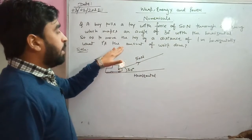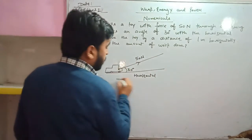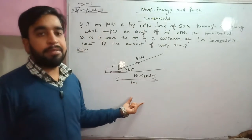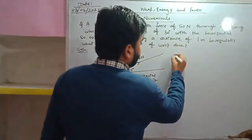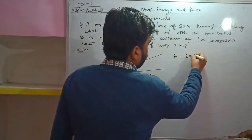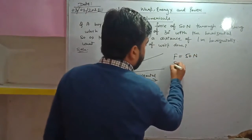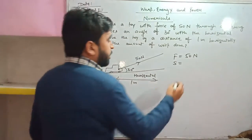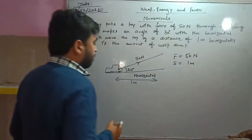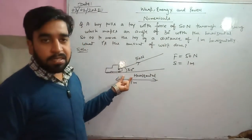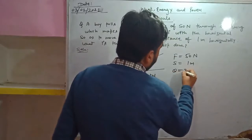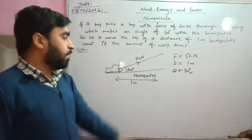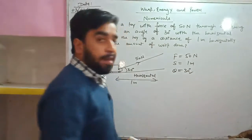The toy is moved by a displacement of one meter horizontally. So the given parameters are: force F = 50 newton, displacement s = 1 meter, and angle θ = 30 degrees. These are all the parameters given to us.